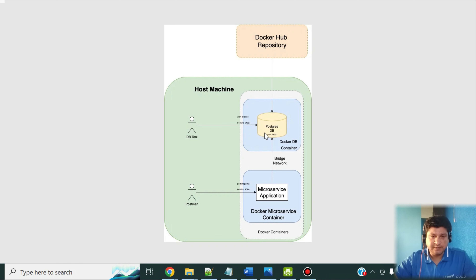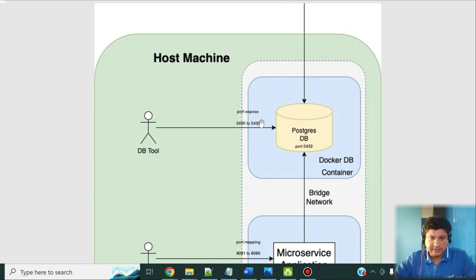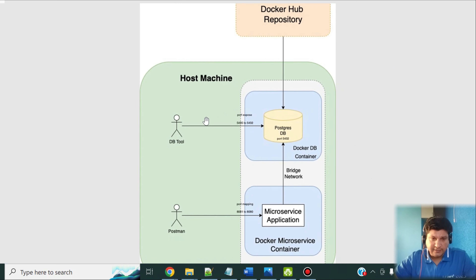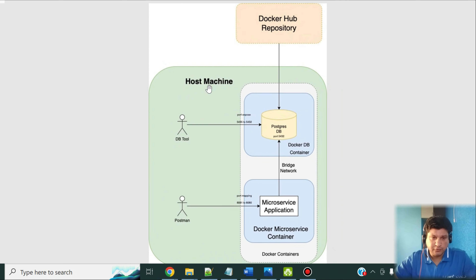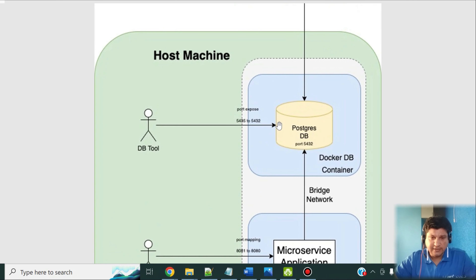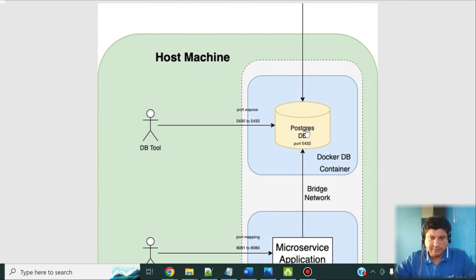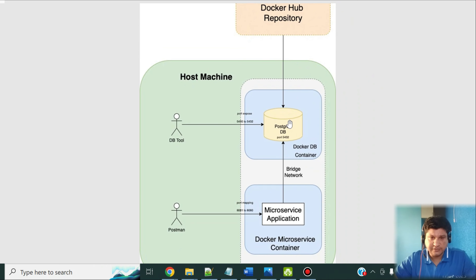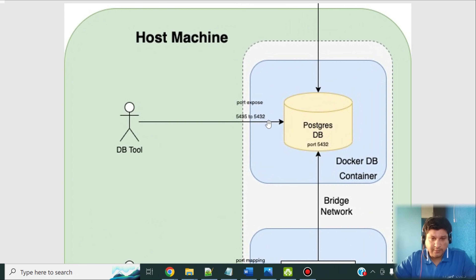I'll be running my Postgres DB in a Docker container. This blue area is my container and the whole green area is my host machine. My host machine is running two Docker containers — container one and container two. In container one, I'm running my Postgres DB, which is pulled from Docker Hub. We are doing port mapping: the database runs on port 5432 inside the container but is accessed on port 5435 from the host.